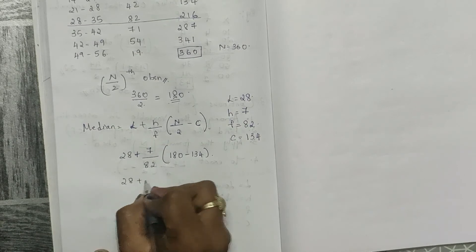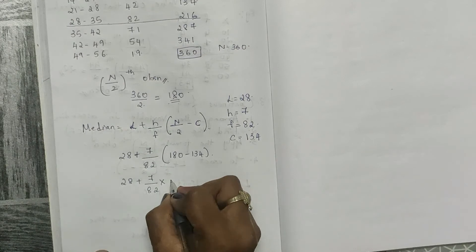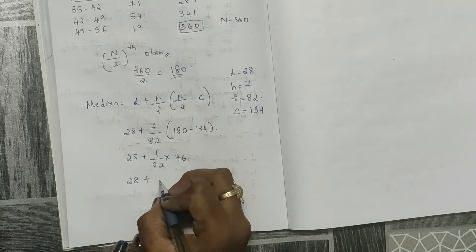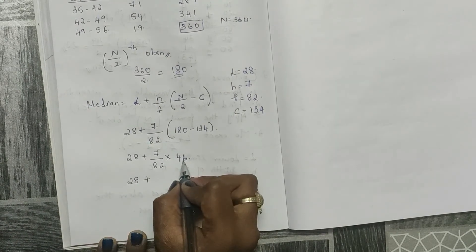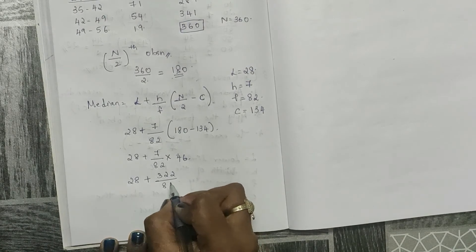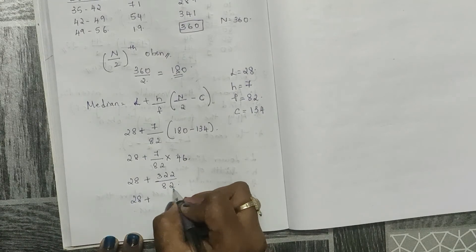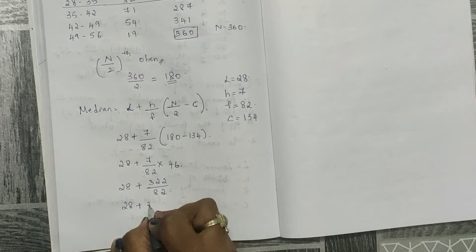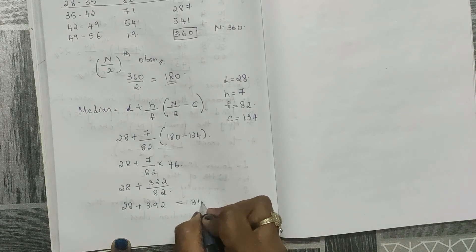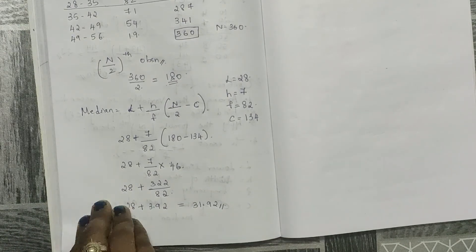180 minus 134 equals 46. Then 7 × 46 = 322, divided by 82 gives 3.92. Adding: 28 + 3.92 = 31.92. So the median is 31.92. This is how you solve median for continuous frequency distribution.